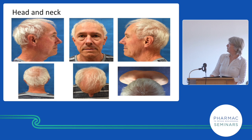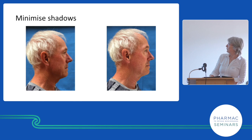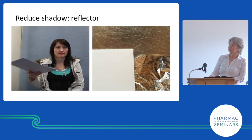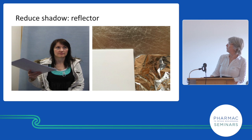Head and neck — a series of pictures. With the normal picture you're going to end up with shadowing under the chin, which is undesirable. We don't want shadowing there — we want to be able to see the neck. We achieve that with a piece of paper, which just reflects the light onto the shadowed area. You can use silver foil or white paper — something that reflects onto the shadowed area.